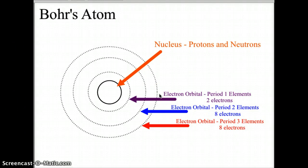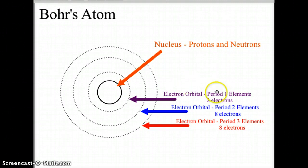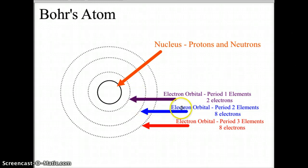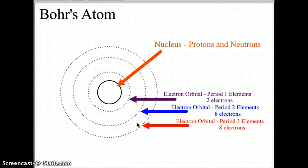The first row of the periodic table has two elements and therefore would have two electrons — 1s2 — and that's why there are two electrons available for the first orbital level in Bohr's model. The second row of the periodic table houses eight elements, and therefore eight electrons are necessary to fill Bohr's second orbital level. The third electron orbital would also hold eight electrons, as there are eight elements in the third level of the periodic table.